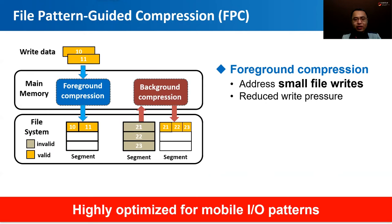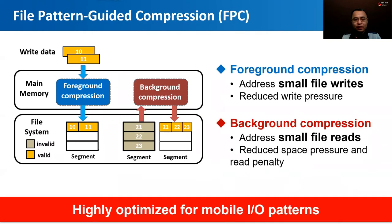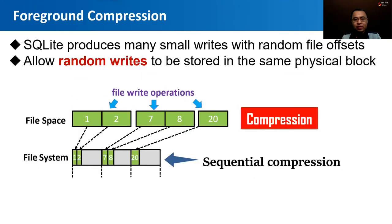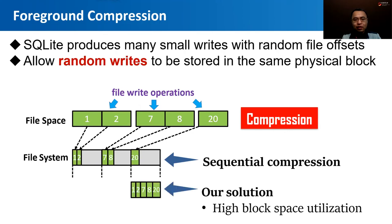Conventional compression has limitations for mobile systems. In this study, we propose a file pattern-guarded compression approach called FPC. First, a foreground compression scheme is used to compress incoming write data, handling small and write-heavy files. Second, a background compression scheme is proposed to compress large files for space reduction with read performance surveillance. Sequential compression on small random writes demands more physical blocks due to discontinuous file offsets. In contrast, our foreground compression eliminates this address constraint, allowing random writes to be stored in the same physical block, consuming only one physical block after compression and greatly enhancing space utilization.